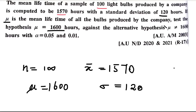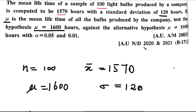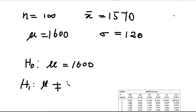The question asks us to test the hypothesis that mu equals 1600. So we have the null hypothesis H0: mu equal to 1600. We assume H0, and for H1, the alternative hypothesis is given in the question as mu not equal to 1600. So H1: mu not equal to 1600, which means this is a two-tailed test.